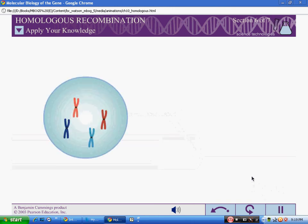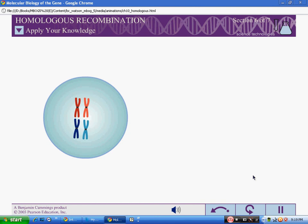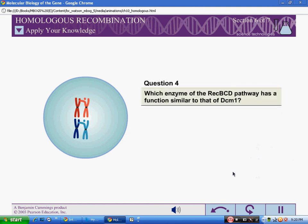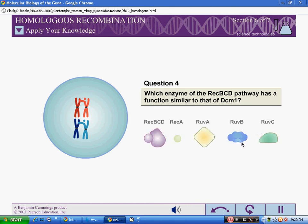DCM1 is a eukaryotic protein used during meiosis to match up homologous chromosome pairs at the beginning of crossing over. Question 4: Which enzyme of the recBCD pathway has a function similar to that of DCM1? Correct.